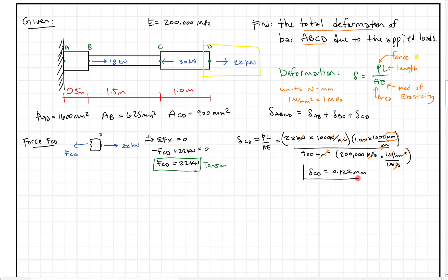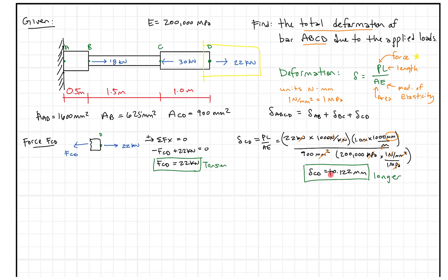We need to consider whether the bar is getting shorter or longer. Since CD is in tension, it's getting longer, so we call this positive. Anything getting longer is positive; if in compression, it's negative and getting shorter. That's step one — bar CD done. Now we repeat this for bars AB and BC.